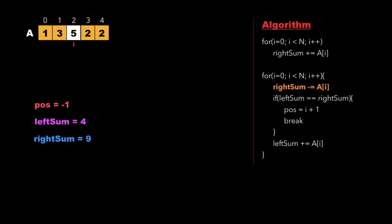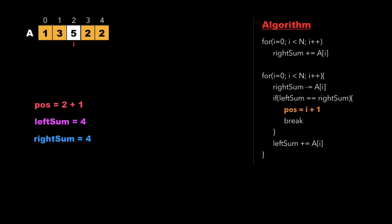For a[2], we update the right sum value to 4 and check whether left sum equals right sum, that is whether 4 equals 4. Since left sum equals right sum, we update the value of position as i plus 1, which is 2 plus 1 equals 3, and we break out of the loop. Finally we return the position value. We encountered element 5 such that the sum of the left part equals the sum of the right part, and the equilibrium point location is 3.